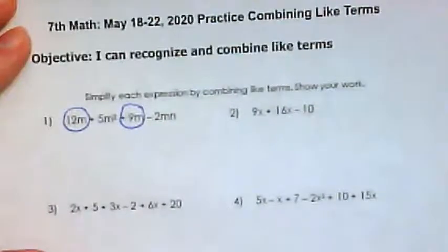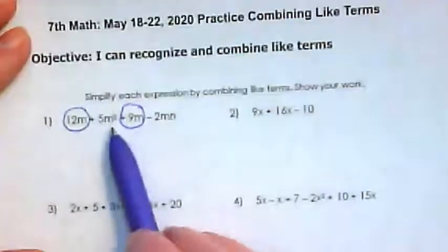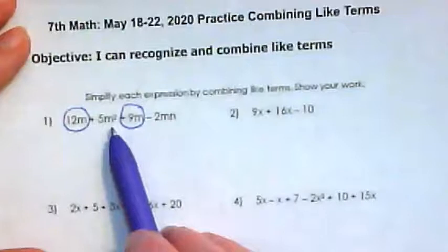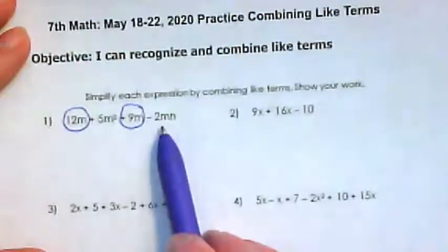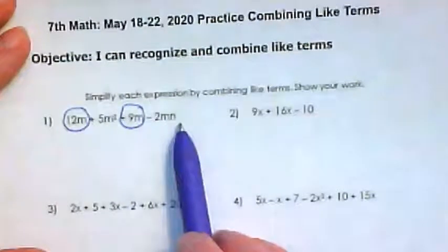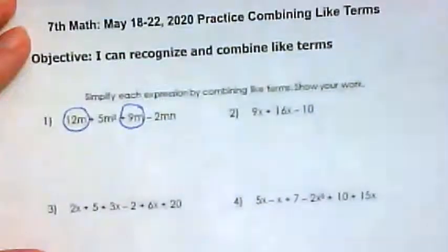It is not a like term with 5m to the second power. Even though they both have an m, the second power changes it. And it's also not a like term to 2mn. That n being multiplied changes that as well.